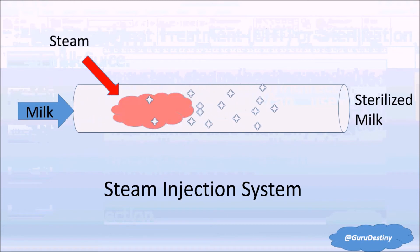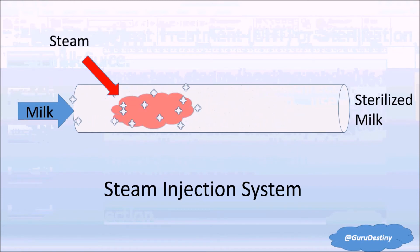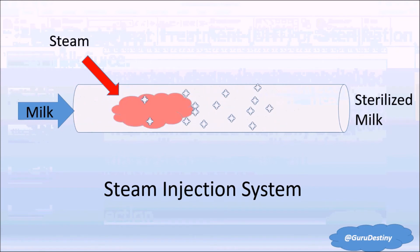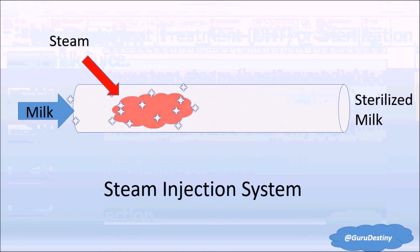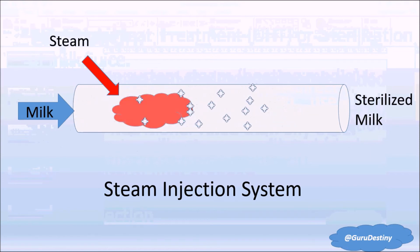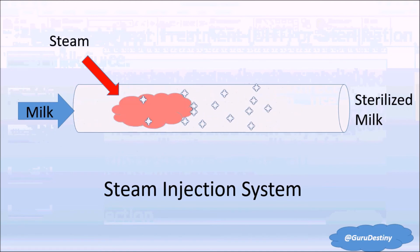In the steam injection system, we can see our product milk is coming from one side of the pipe, and steam is being injected directly into the milk — we call it the steam injection system. The quickly heated and slightly diluted product then goes into another section to remove this dilution and heat.